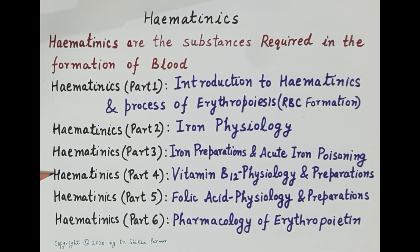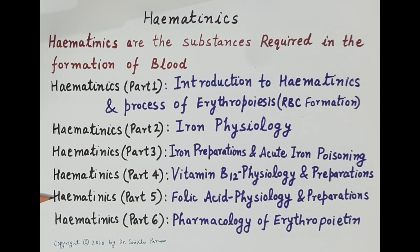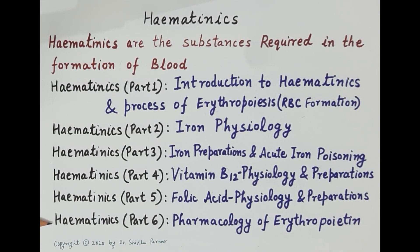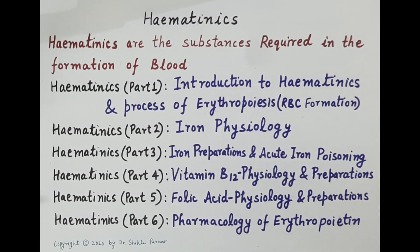The fourth video also covers oral and parenteral vitamin B12 preparations. The fifth video covers the physiology of folic acid — absorption, transport, metabolism, and physiological functions of folic acid and its oral and parenteral preparations. The sixth and last video covers the pharmacology of erythropoietin, a hormone produced by the kidneys, and its role in the formation of RBCs.